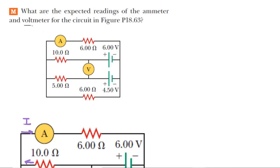To determine the reading of the voltmeter in the given circuit, we will mark two points and label them. We'll call this point right here point A, and then this point right here is going to be point B. We're trying to find the potential difference between those two points, and to do that we're going to be using what is known as the loop rule. In the loop rule you pick two points and then you travel from one point to the other along the circuit.